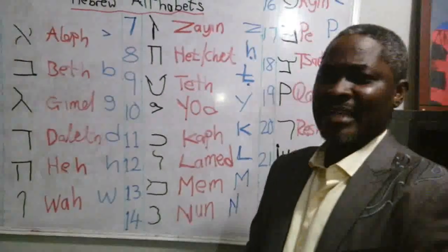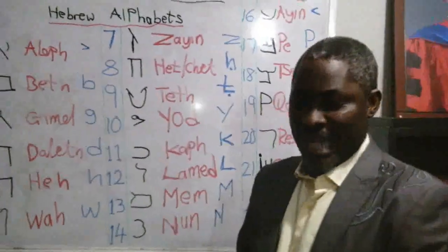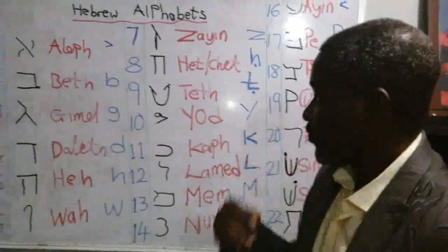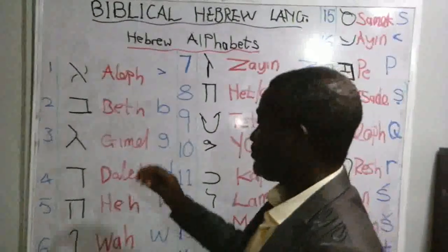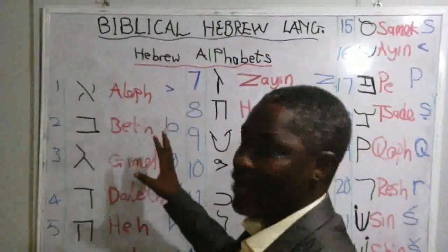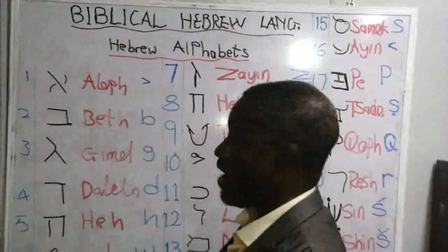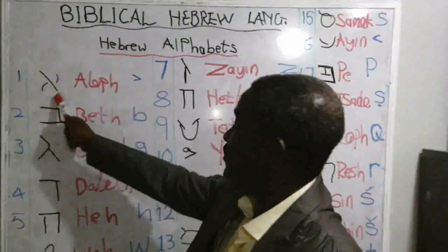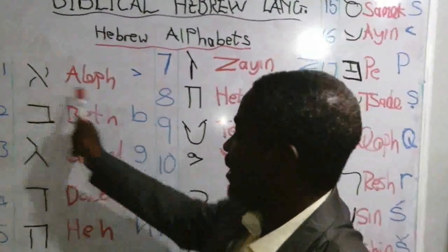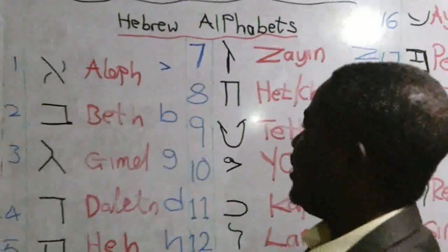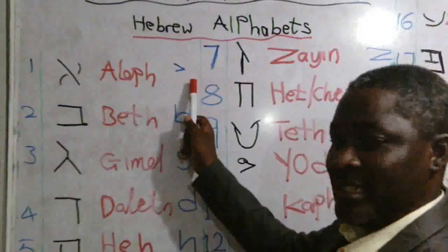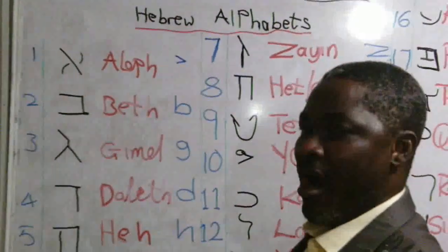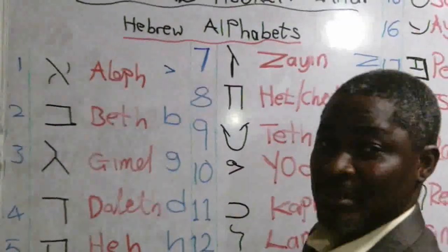Today, I want us to start with the alphabet without wasting much time. When you come to the board here, the letters are already written. We start with the Hebrew alphabet. The first one is this sign called Aleph. Now, it has no representation in English — it is just like a glottal sound, pronounced like 'ah,' when you say it.